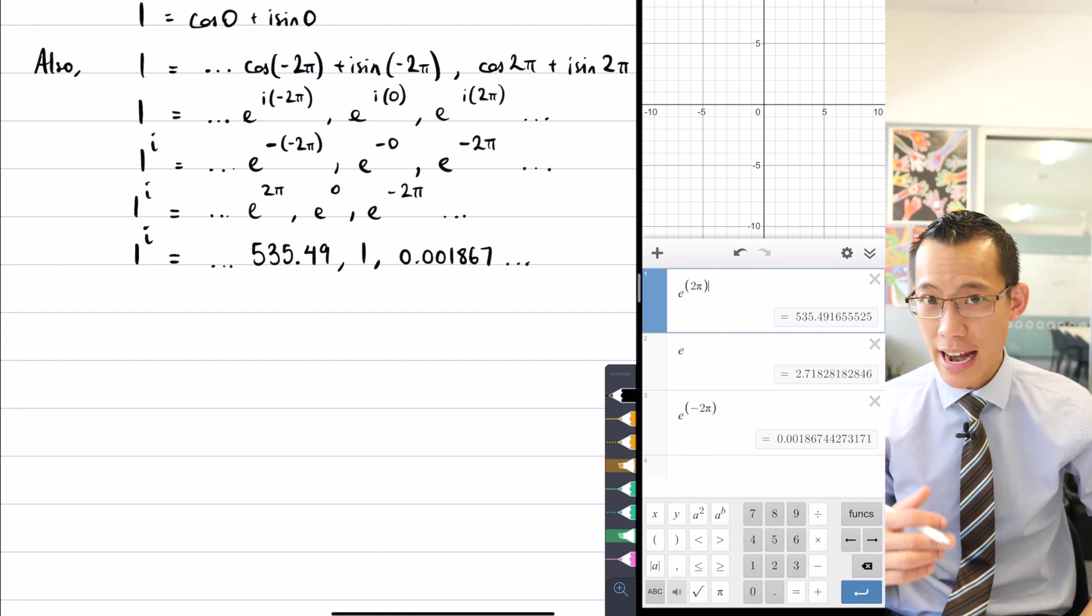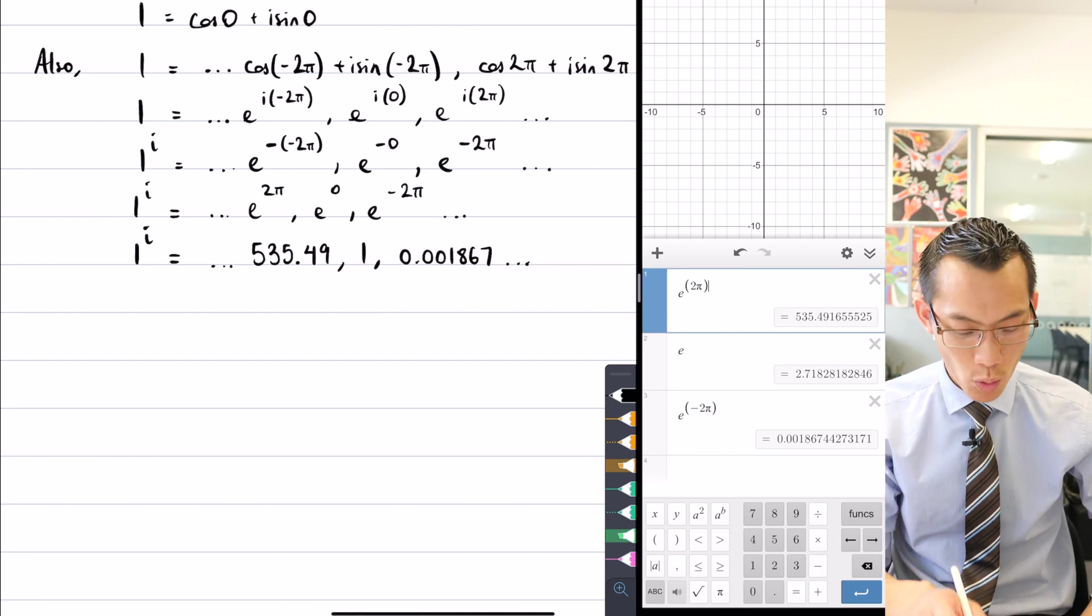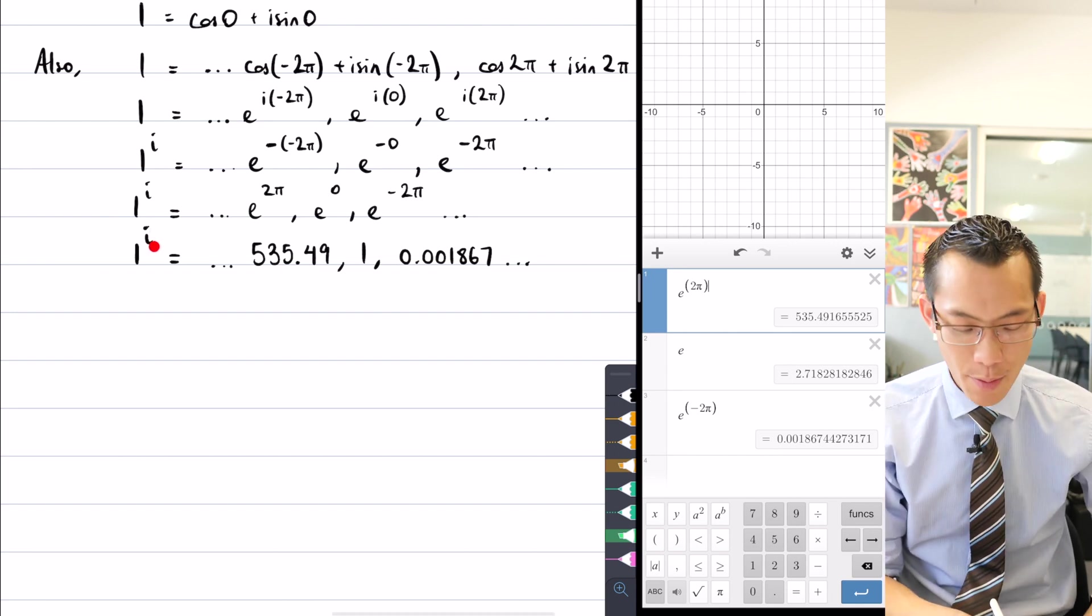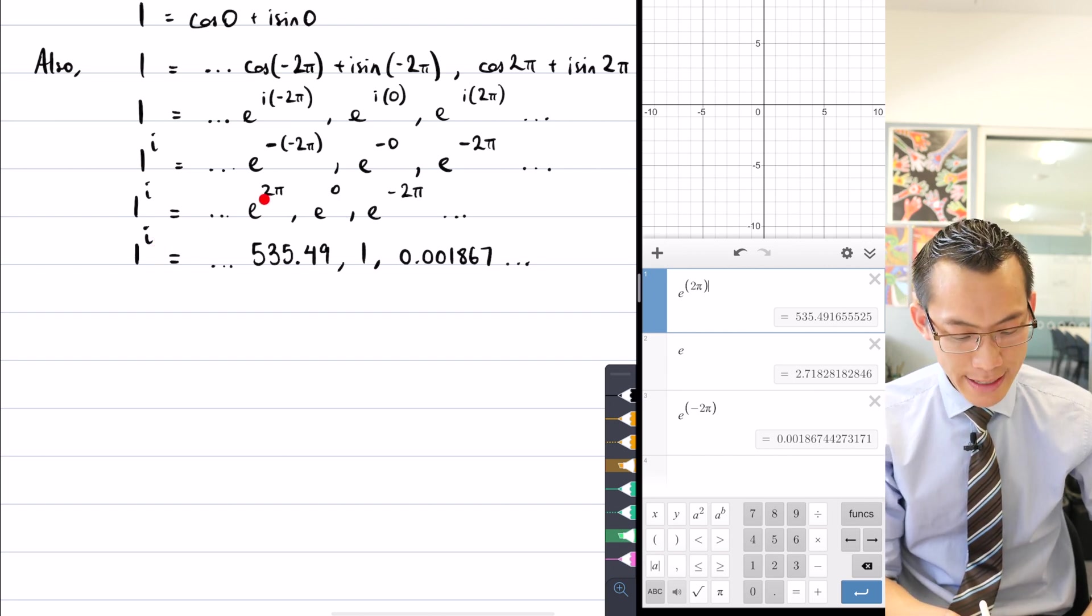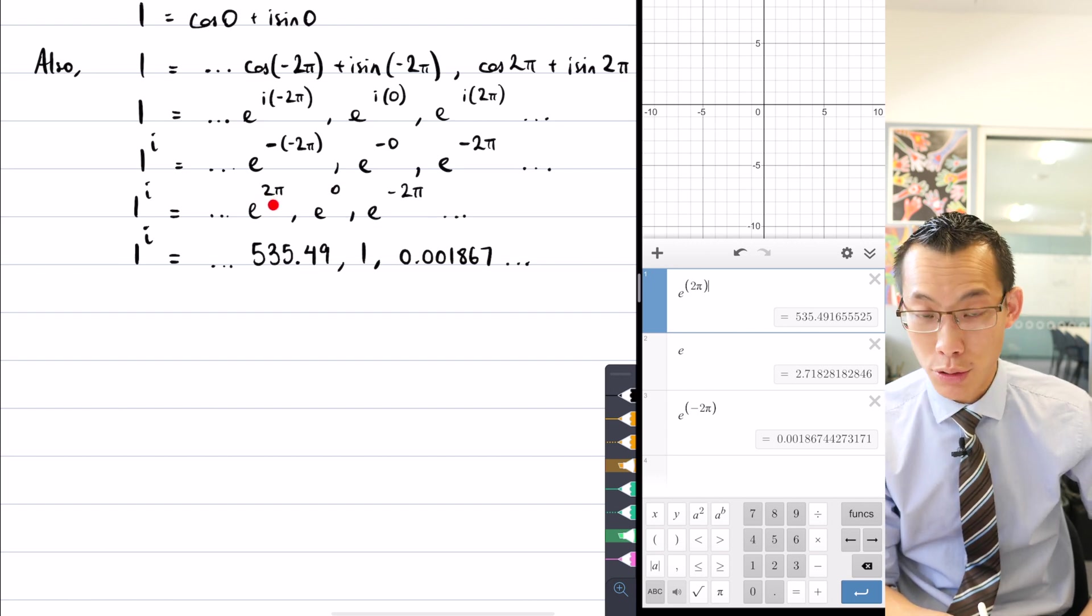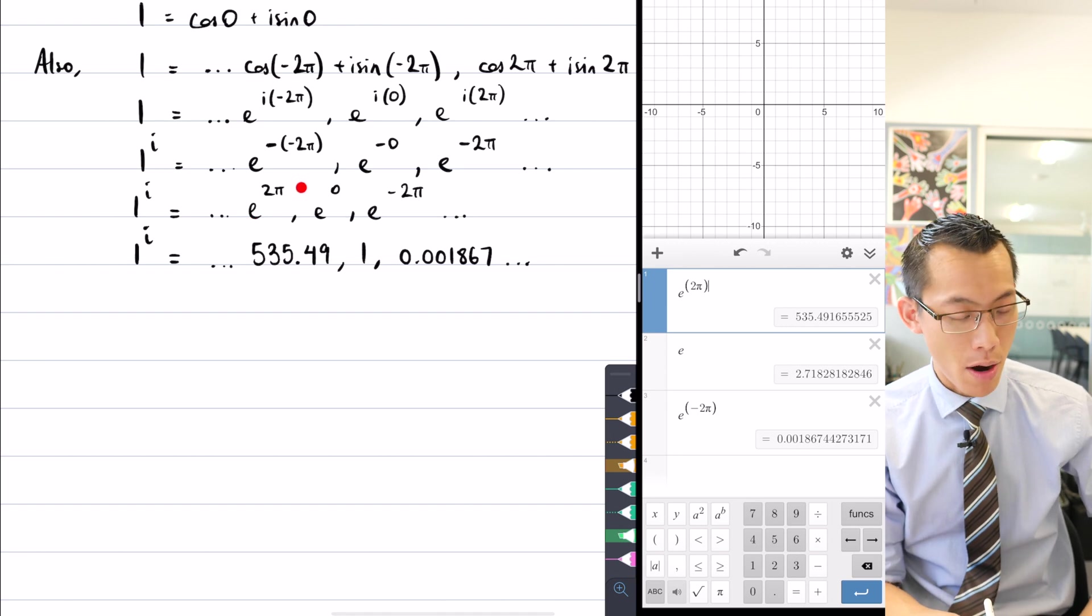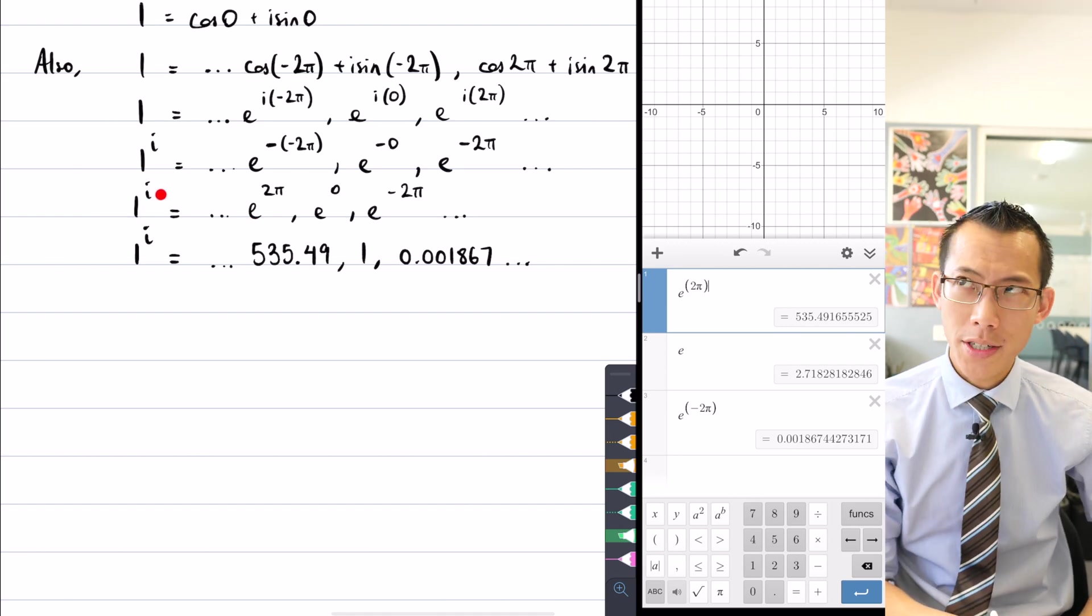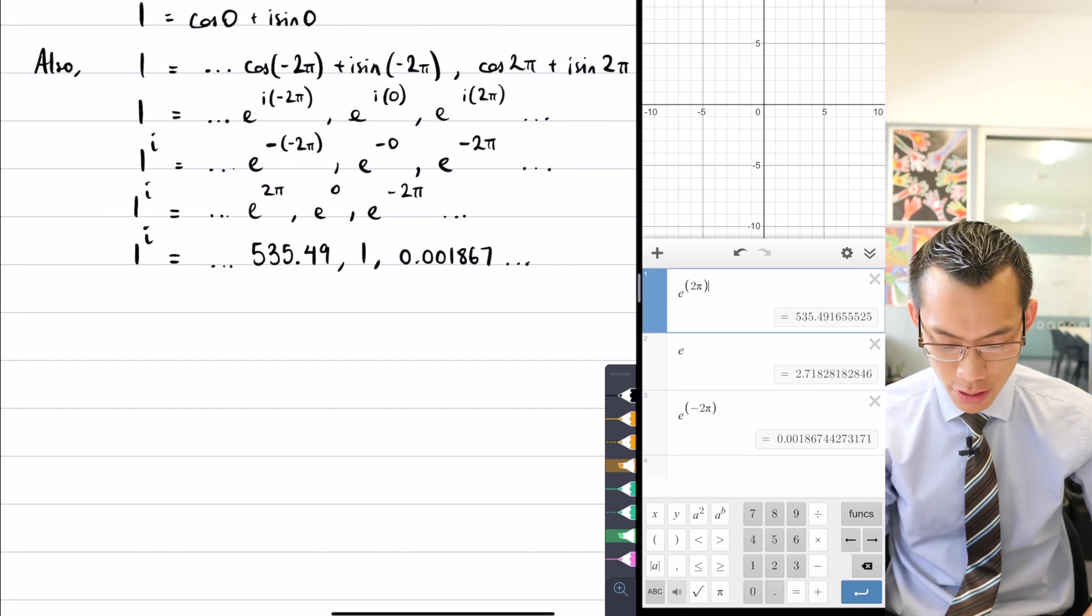This can take on any different value that I want. If I take one to the power of not just i, but one to the power of some other multiple of i or something like that, will lead to some other value. Not just an integer multiple of two pi, I could have one to the power of half i would be just e to the power of pi, one to the power of a quarter i would be e to the power of pi on two, and on and on and on. So in fact...